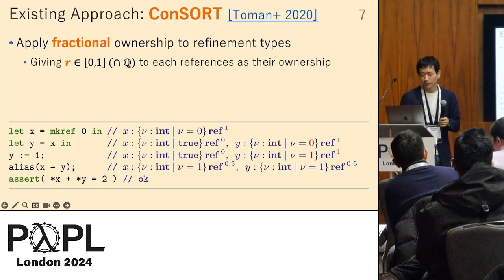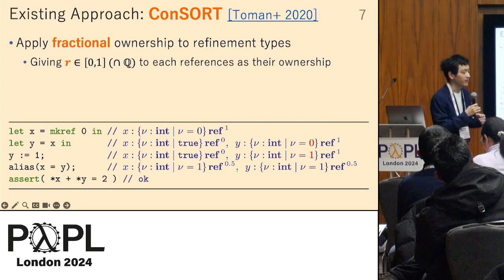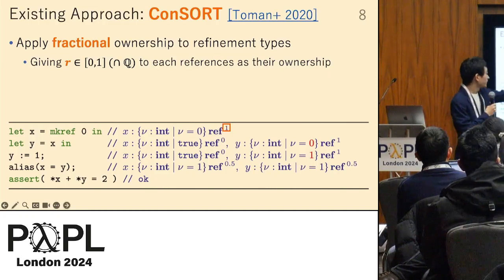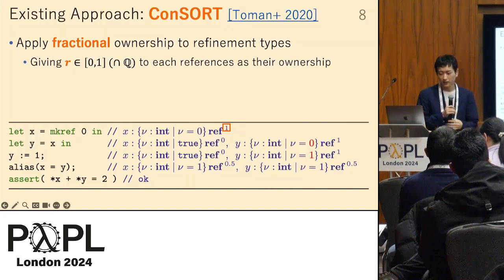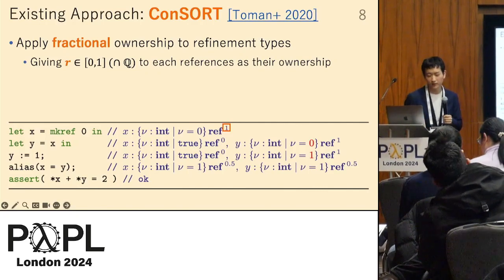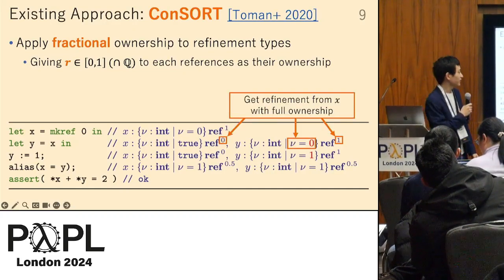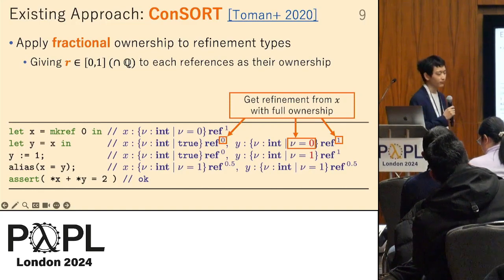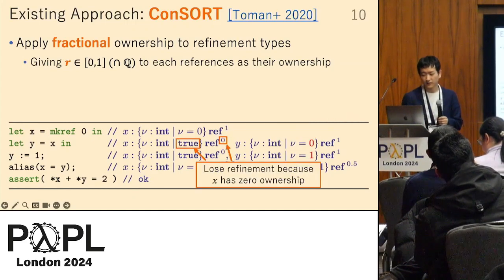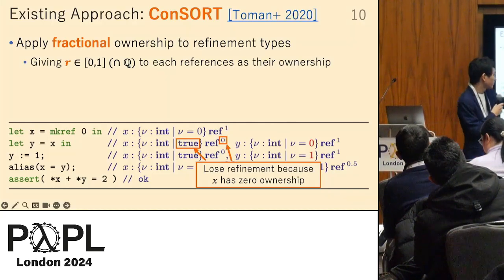The comments on this slide show the typing from the Consort type system. The difference from the naive approach is that the reference type has ownership 1 in its type. At the second line, the reference y deprives x of all of its ownership and refinement, so the refinement of x becomes to have no information about its content — effectively true.